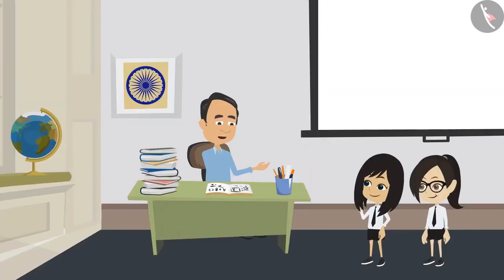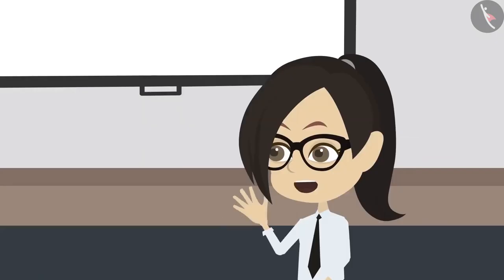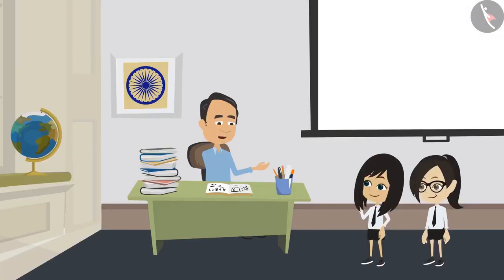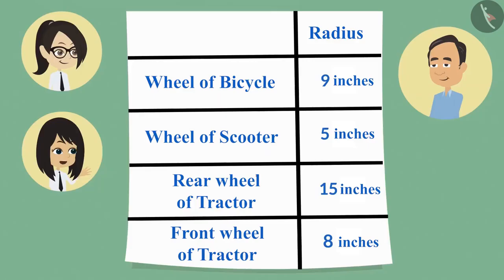So to measure the wheels, which properties of the circle did you measure? Sir, we measured the radius of all the wheels. Then let us see whatever you have measured. Here you are, sir.